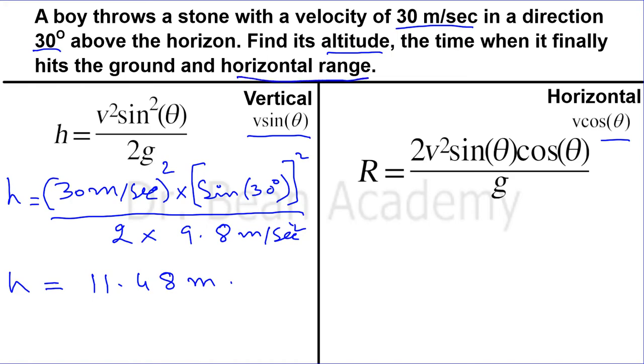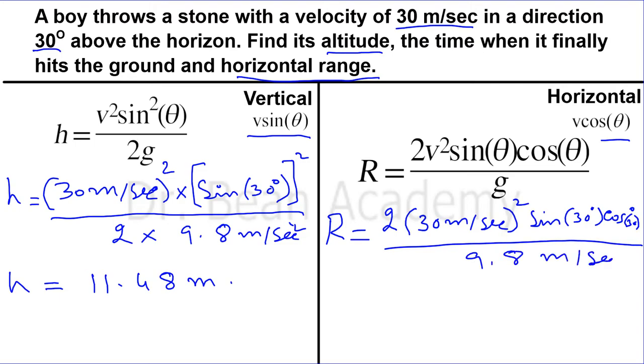Let's find the horizontal range of the stone. Here is the formula we derived earlier: R equals 2 v squared sine theta cosine theta over g. So let's put the values. 2 times 30 meters per second whole squared sine of 30 degrees cosine of 30 degrees divided by 9.8. Using my calculator to get the final value which is 79.53 meters.